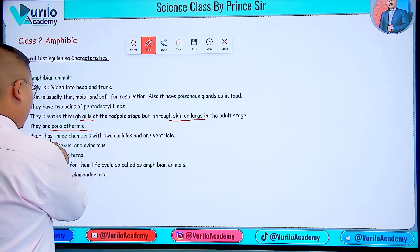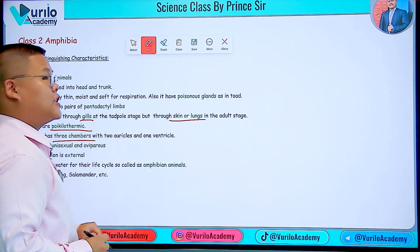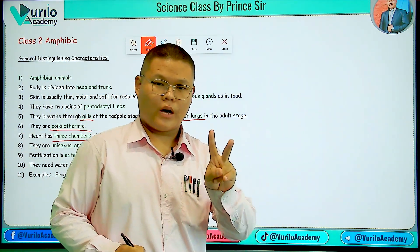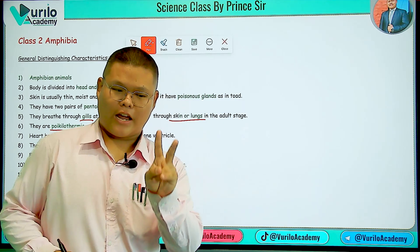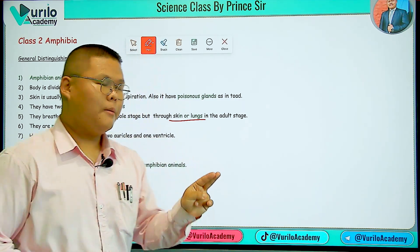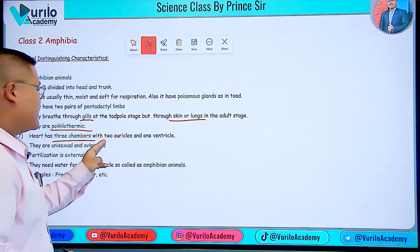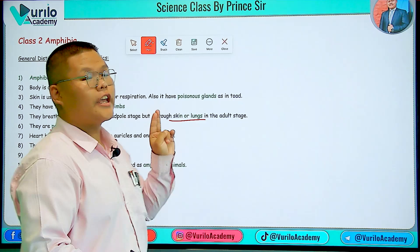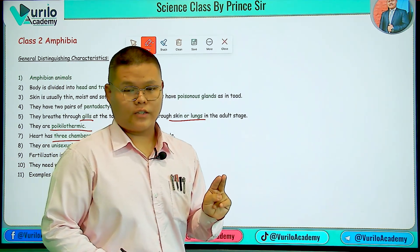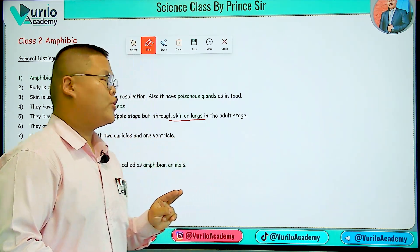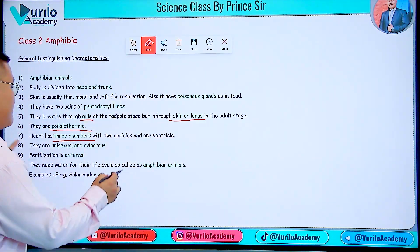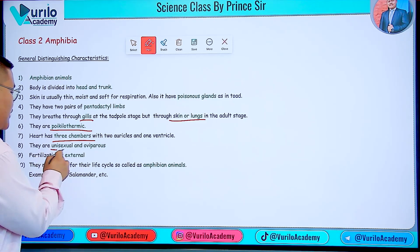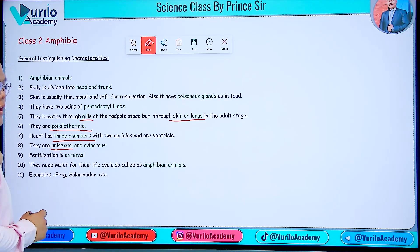The heart has three chambers. In fish there were two chambers — one auricle and one ventricle. But in amphibians there are two auricles and one ventricle, giving three chambers total. This is your point to be noted.